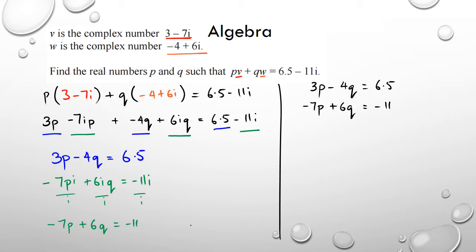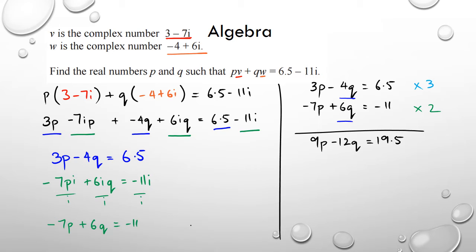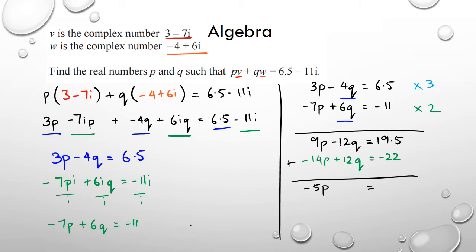I'm going to show you the old-fashioned way using elimination. I'm looking at eliminating q — the coefficients are negative 4 and 6 — so I multiply the first equation by 3 and the second equation by 2. That gives me 9p minus 12q equals 19.5, and at the bottom minus 14p plus 12q equals negative 22. Adding them up, the 12q terms cancel out.